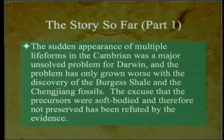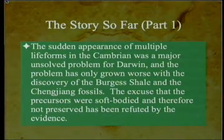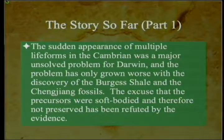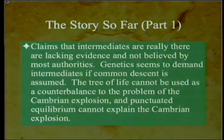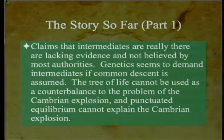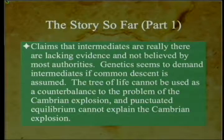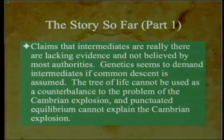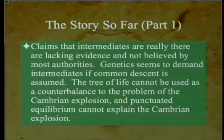My own summary of Meyer's thought: the sudden appearance of multiple life forms in the Cambrian was a major unsolved problem for Darwin, and the problem has only grown worse with the discovery of the Burgess Shale. The excuse that precursors were soft-bodied and therefore not preserved has been refuted. Claims that intermediates are really there lack evidence and are not believed by most authorities. Genetics seems to demand intermediates if common descent is assumed. The tree of life has its own problems, and punctuated equilibrium cannot explain the Cambrian explosion because it also requires a tree like standard Darwinian theory.